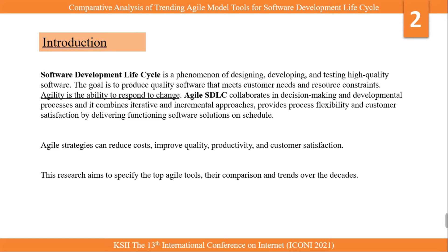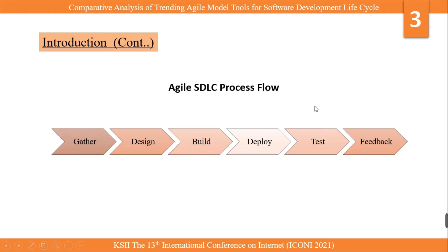This is the agile SDLC process flow. The first step is to gather and evaluate the requirements. After requirements are gathered and evaluated, they are designed using UML models, flowcharts, and other design tools and strategies. After that, the design is implemented and the model is built.